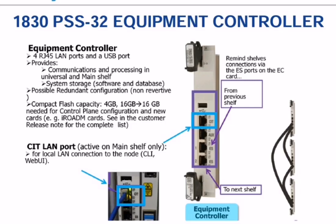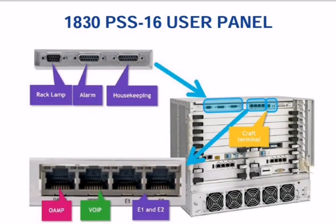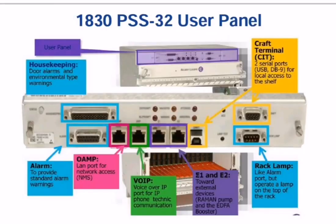For CIT, we use it for login and we connect the CIT port with an RJ45 connector. This RJ45 provides communication between the universal shelf and the main shelf. I will show you this in the next slide — the complete structure of DWDM. This is the universal shelf and we connect it with the main shelf so that they both can communicate with each other.